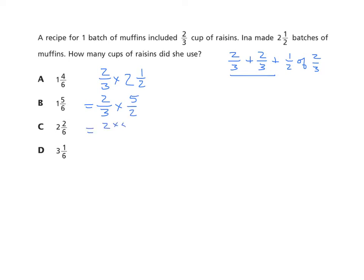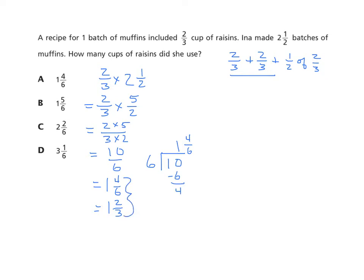We multiply both the numerators and the denominators: two times five over three times two gives us ten-sixths. I can change that to a mixed number since our answers are given as mixed numbers. Six goes into ten once with a remainder of four, so the answer is one and four-sixths. They could also express the answer in simplified form as one and two-thirds. We need to be prepared to recognize both equivalent forms.